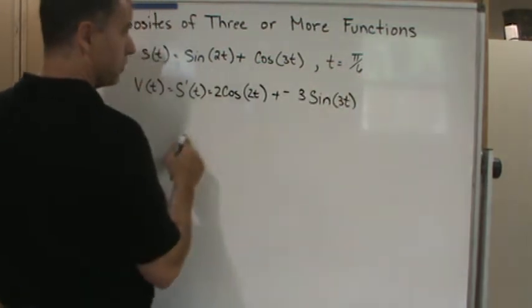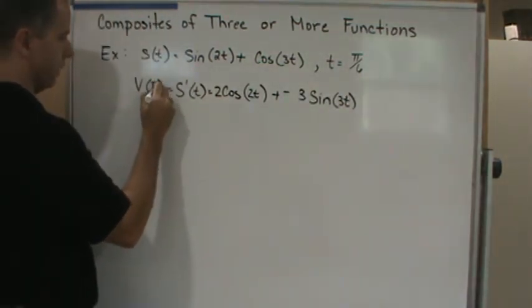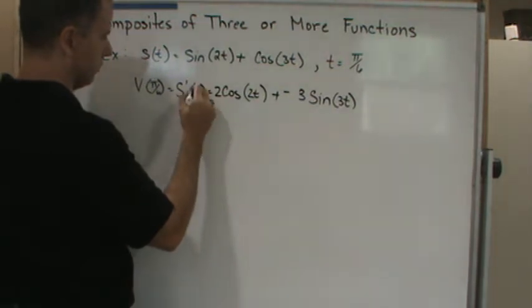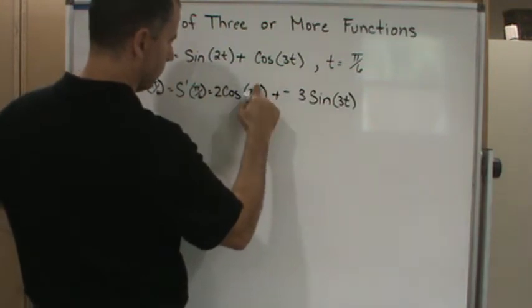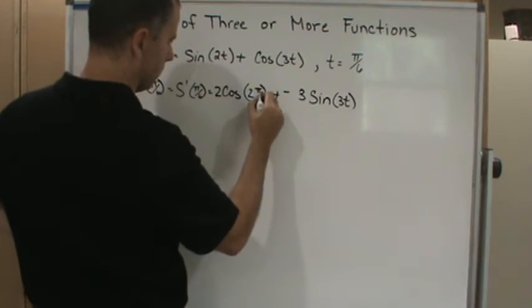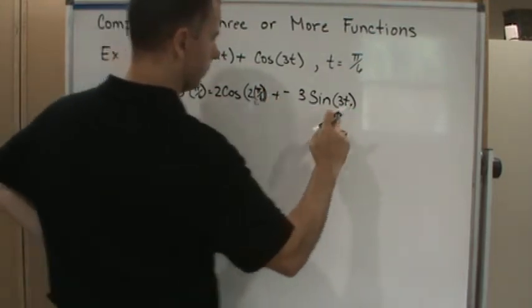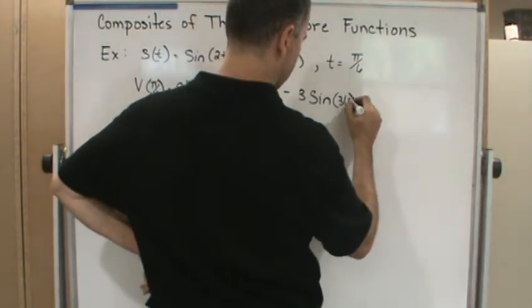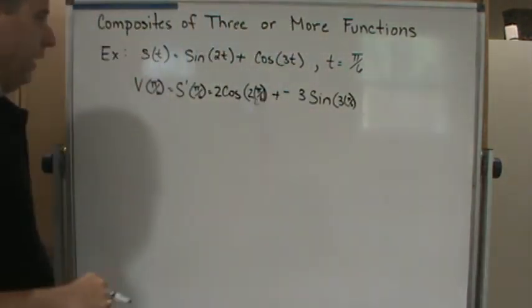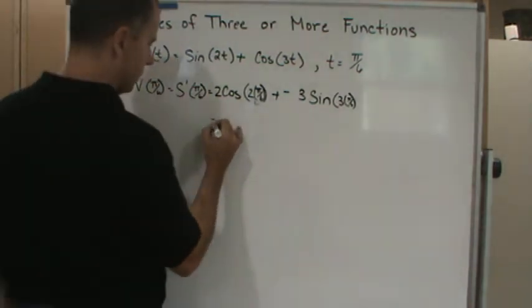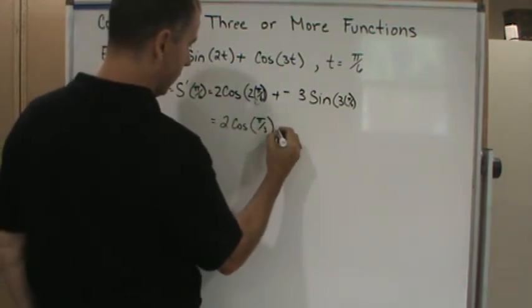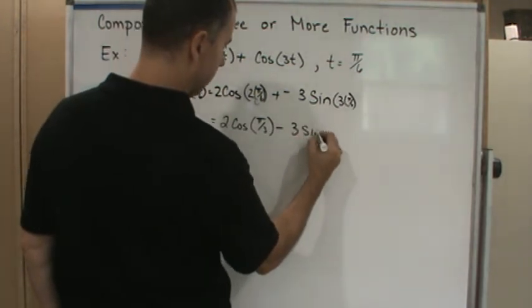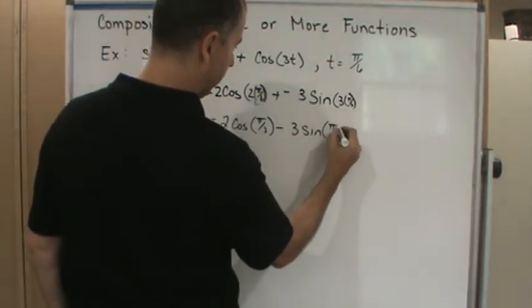Now I want the value of the velocity at t = π/6, so I'm just going to put π/6 in. This is going to be 2 times cosine of π/3 minus 3 times sine of π/2.